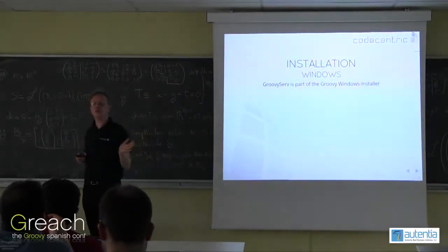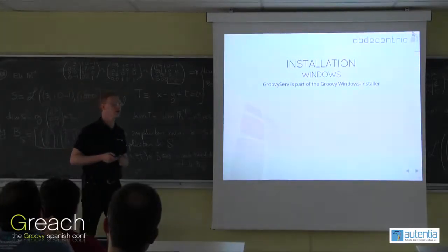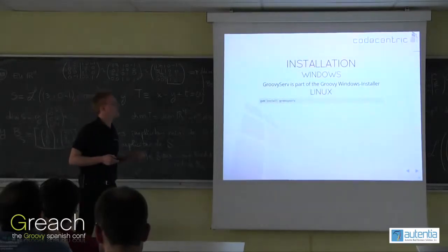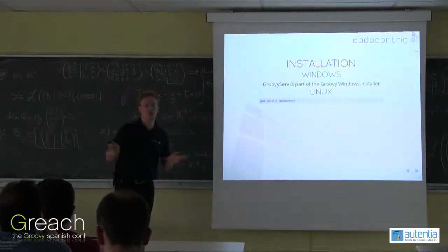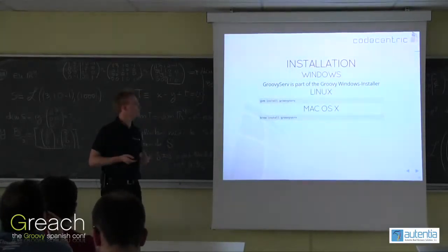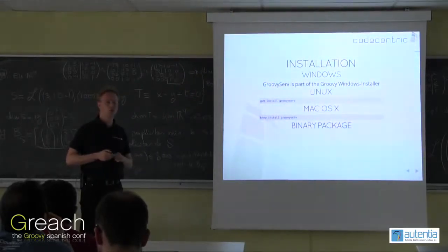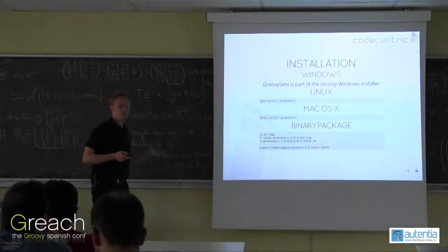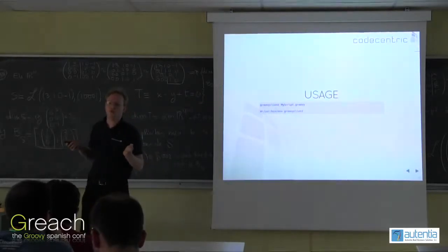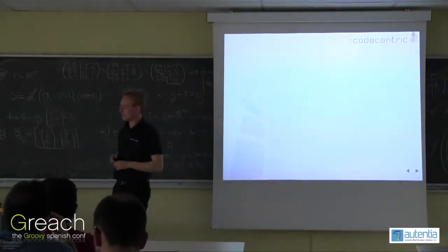How to install: for Windows, you're in luck because Groovy Serv is part of the Windows installer — it's already included, so you can use it right out of the box. On Linux, just use SDKMAN, install Groovy Serv and you're done. For Mac OS you can also use SDKMAN, or additionally you can use Homebrew. If you're behind an enterprise firewall and can't get to the internet, you can install it from binary packages directly — set the path and you're done. After that, you call it the same way as Groovy, just using groovyclient instead of groovy, and you can state the same in your scripts with the shebang command.